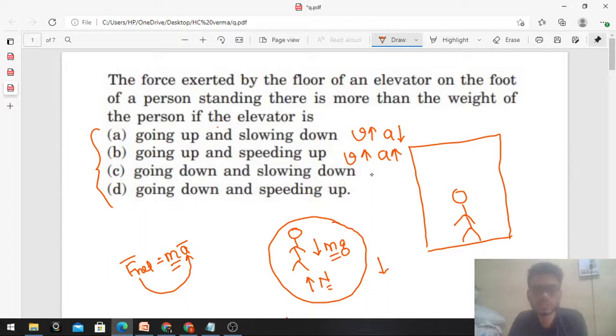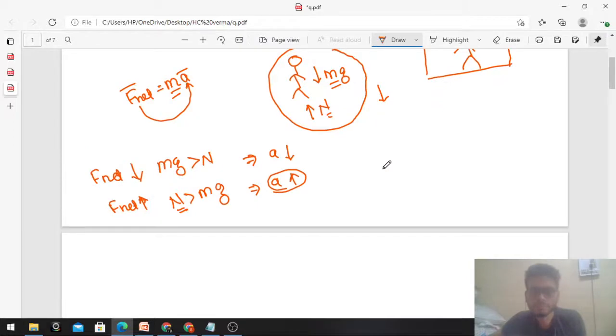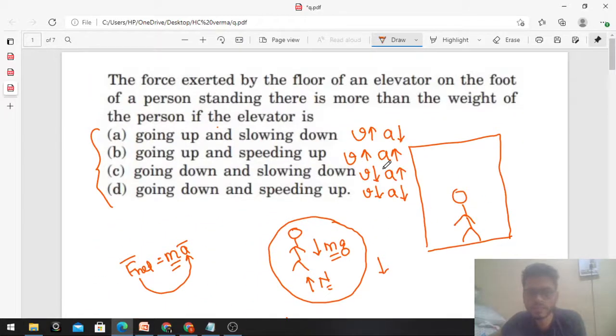Going down means velocity is downward. Slowing down means acceleration is opposite to the direction of velocity. So now you can check when the normal force is greater than the weight.